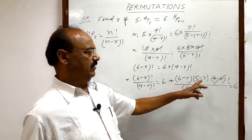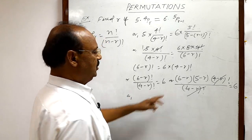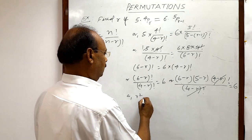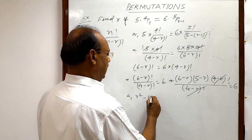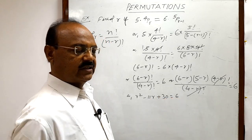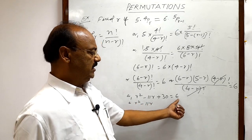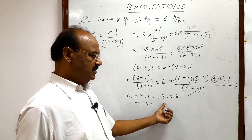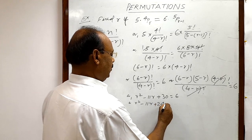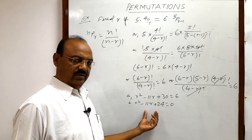Now let us multiply the two remaining factors (6 minus r) and (5 minus r). After multiplication we get r² minus 11r plus 30 equals 6. Transposing 6 to the left hand side gives r² minus 11r plus 24 equals 0. We will now factorize this to find the value of r.